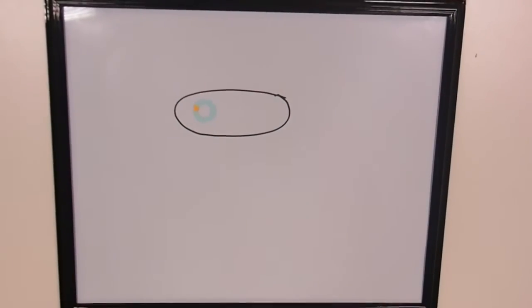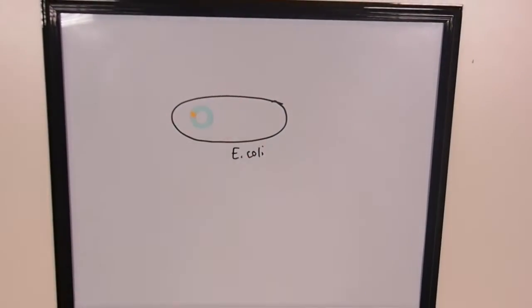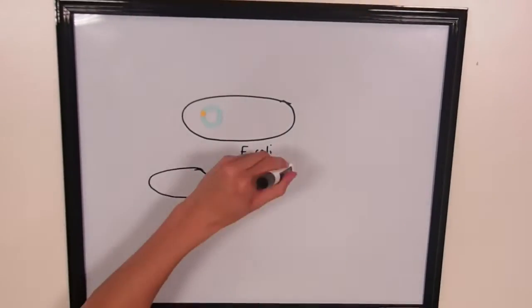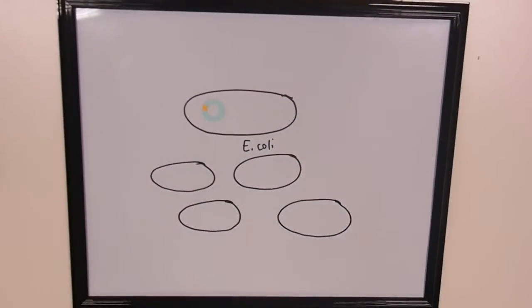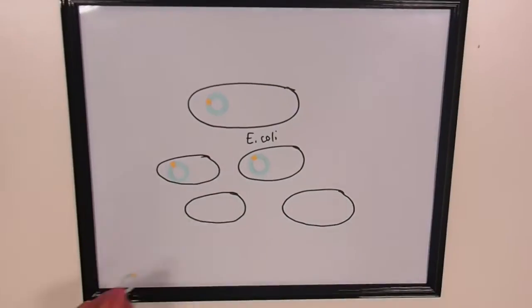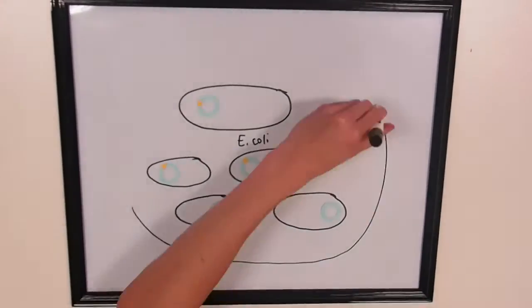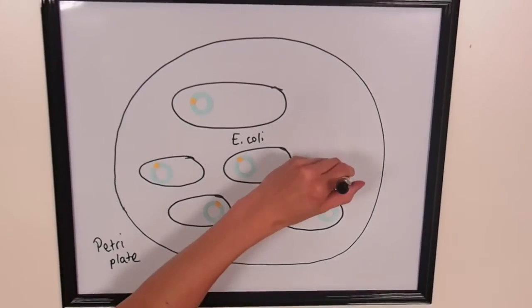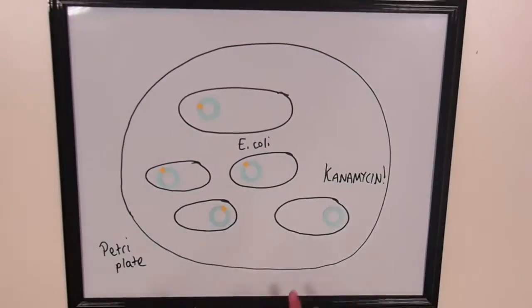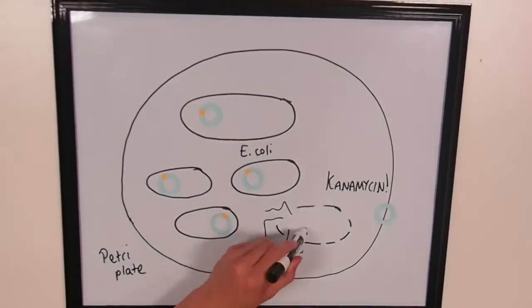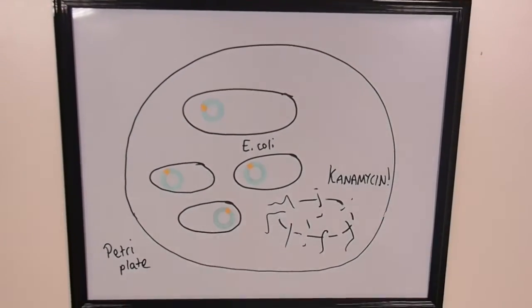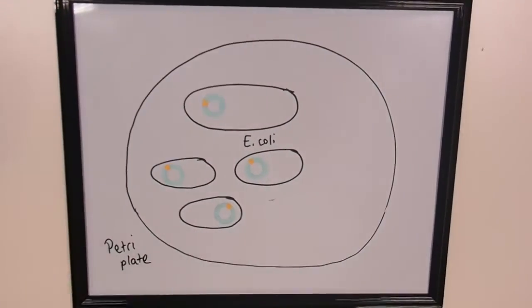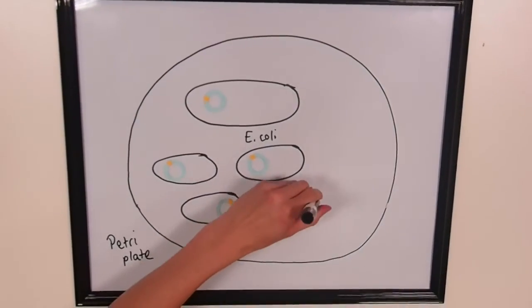The plasmid is inserted into competent cells and incubated for replication. Antibiotic resistance genes are also inserted into the vector, allowing selective degradation of cells that do not contain the recombinant plasmid.